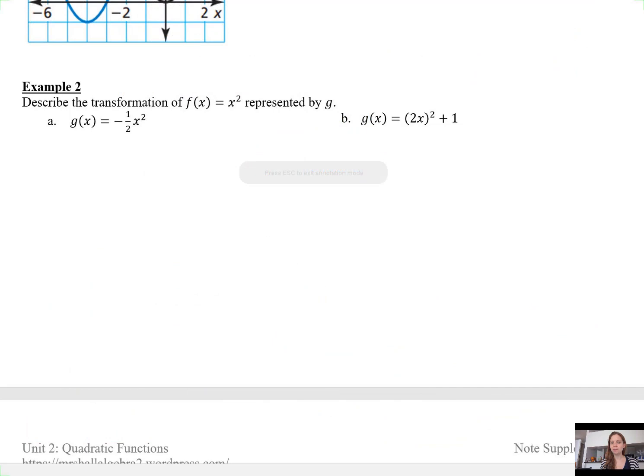Example 2. Describe the transformation of f(x) = x² represented by g. Again, I'm going to rewrite these g(x) functions in vertex form. You don't need to do this. You can probably just write the transformations that happen because we've done enough transformation practice. So negative 1/2 is my a value. a equals negative 1/2.